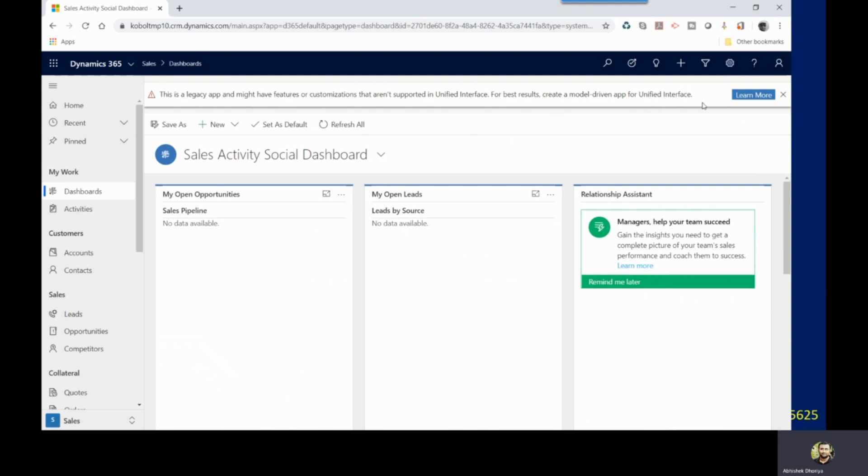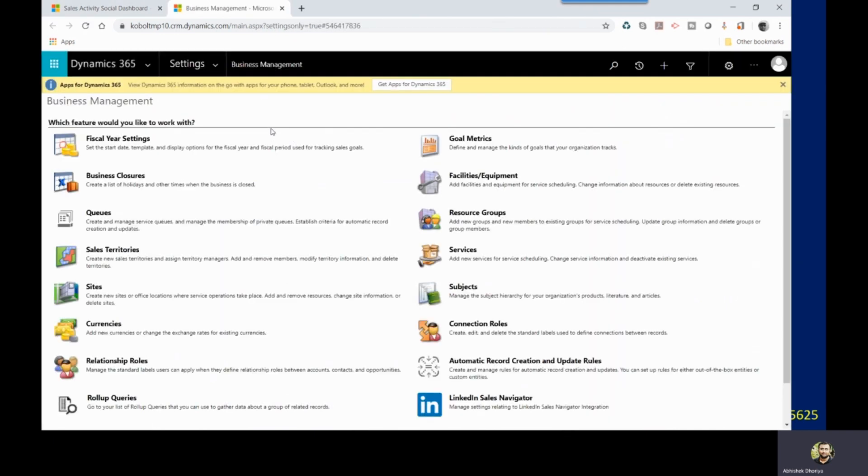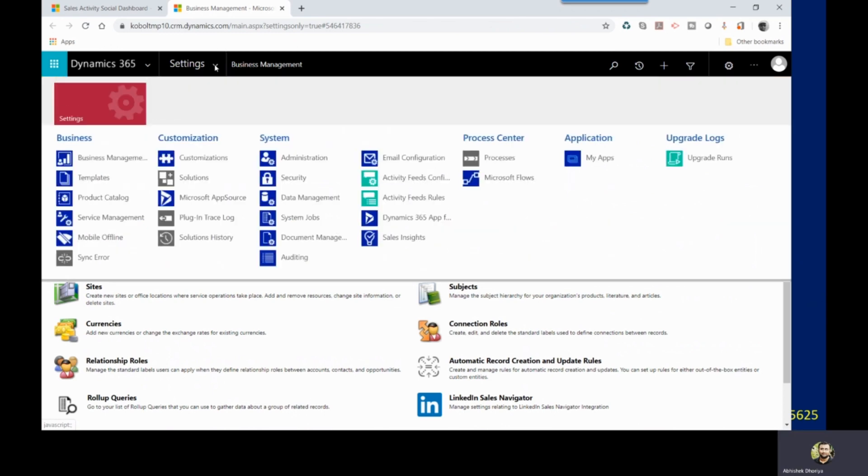So in order to navigate to the announcements section you click on this gear icon and click on advanced settings. The moment you click there you will be landed on business management settings. Click on this drop down arrow again.